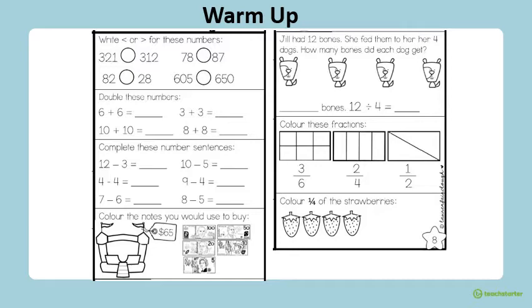Okay, let's go through the answers. The first question asks you to write a greater than or less than symbol for these numbers. I tell my class that the greater than and less than symbols are like a crocodile's mouth, and the crocodile always wants to eat the biggest number. So his mouth is always open towards the biggest number. 321 is the biggest number, so it's greater than 312. 78 is less than 87. 82 is greater than 28, and 605 is less than 650.